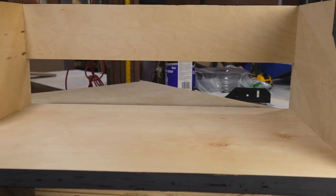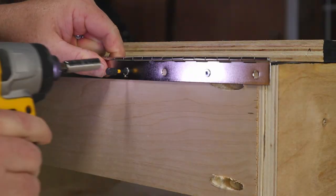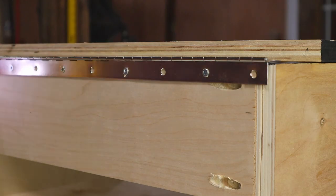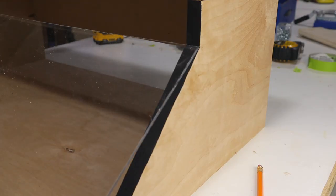The top of this will open up so I can add and remove filament so I'm going to use a piano hinge along the back where it won't be seen. Now I can just peel the protective film off the plexiglass and attach it to the front with a few screws.